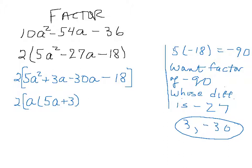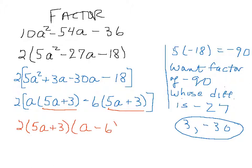And what can I take out of the next two terms? Minus 6. And I get, better get the same thing, 5a plus 3. And so what I can do here is factor out the 5a plus 3. And this gets written as 2 times 5a plus 3 times a minus 6.